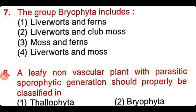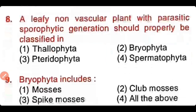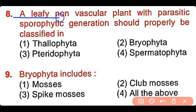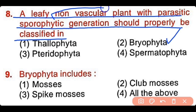Question number 7: The group Bryophyta includes liverworts and ferns, liverworts and clubmosses, mosses and ferns, or liverworts and mosses. The correct answer is option 4 — bryophytes include liverworts as well as mosses. Question number 8: A leafy non-vascular plant with parasitic sporophyte generation should be classified in Thallophyta, Bryophyta, Pteridophyta, or Spermatophyta. The correct answer is option 2 — a non-vascular plant with a parasitic sporophyte dependent on the gametophyte is present in bryophytes.